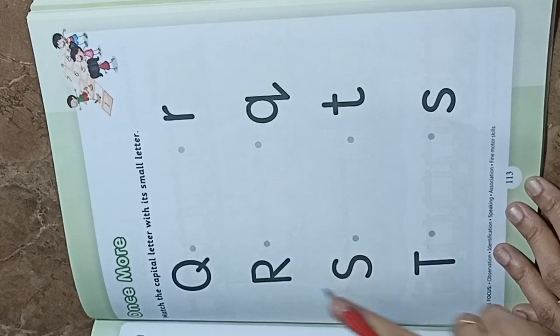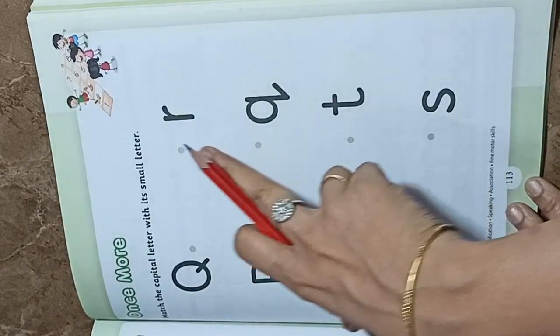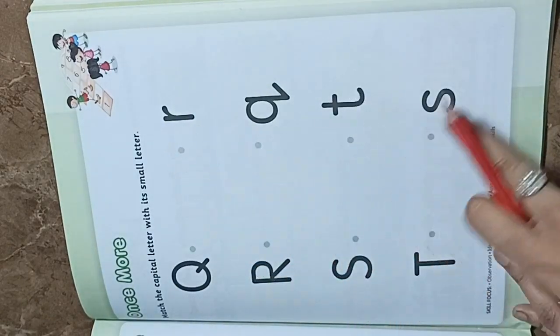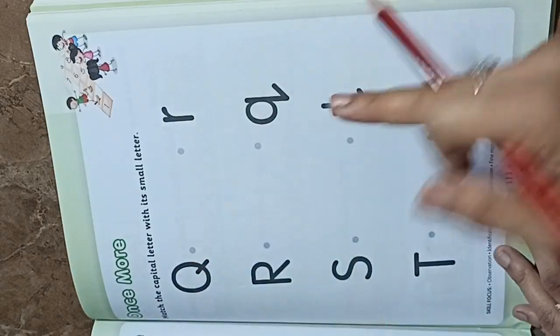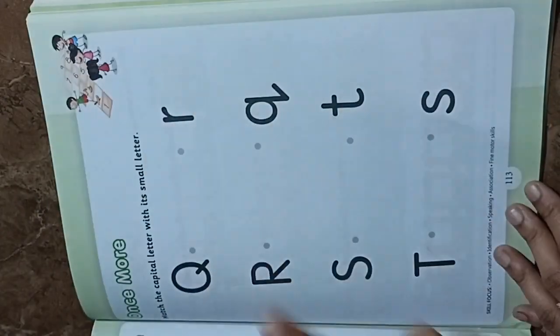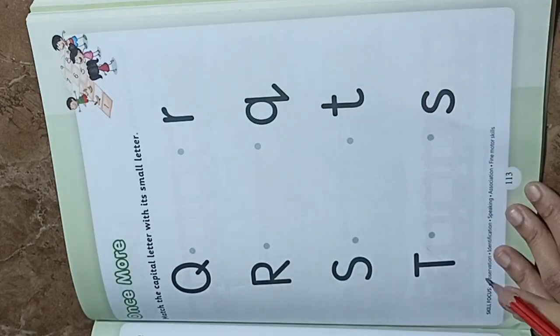What do we call one small letter? Q, R, S, T and in small letters we have a small letter. So, we have a capital Q with a small q, capital R with a small r, capital S with a small s and capital T with a small t.